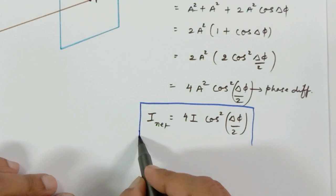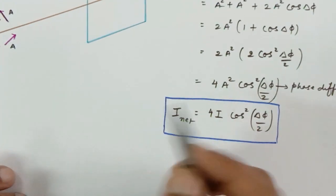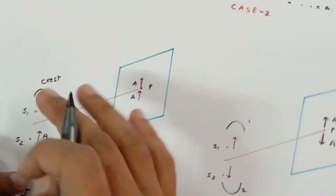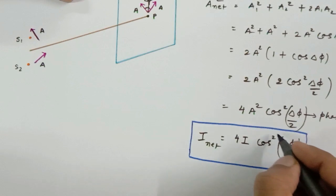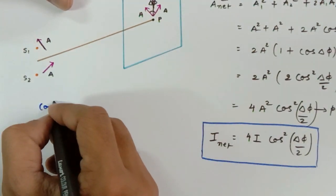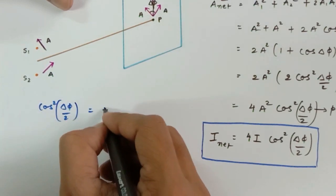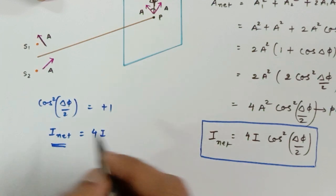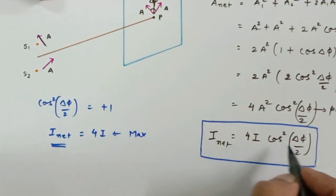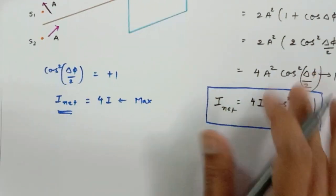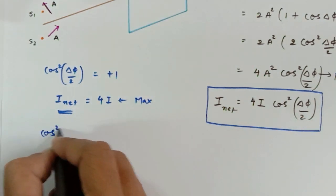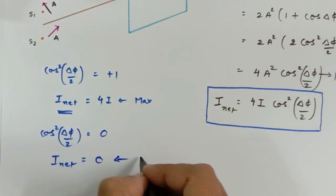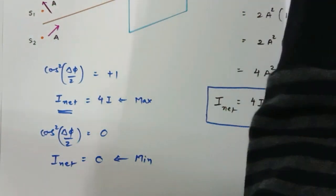Now let us check whether this equation correlates with the diagrams. The maximum value of cos²(Δφ/2) is 1, so maximum intensity I_net = 4I. This matches what we found in Case 1. The minimum value of cos²(Δφ/2) is 0, so minimum I_net = 0. This matches Case 2 as well.